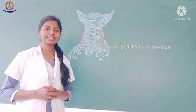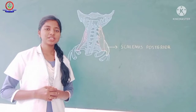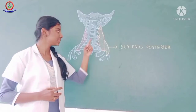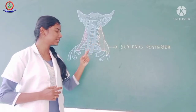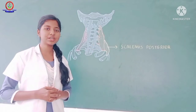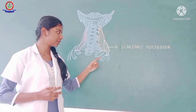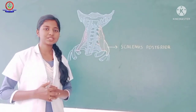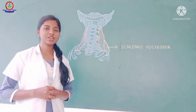Let's look at the muscle scalenus posterior. It originates from the posterior tubercle of the transverse process of C4 to C6, and it is inserted into the outer surface of the second rib.